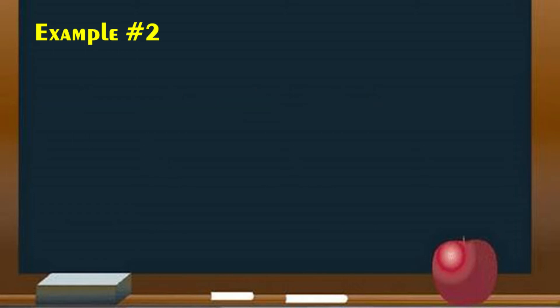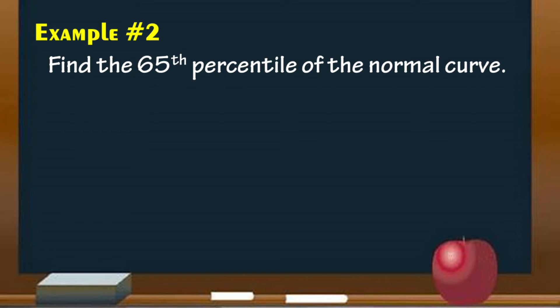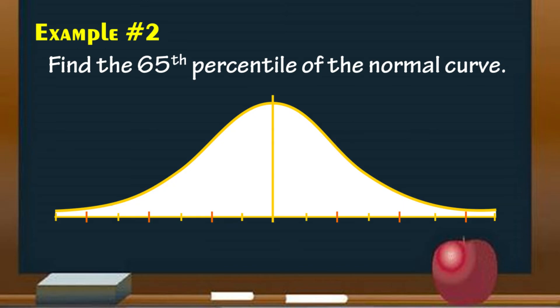Example number 2, locate the 65th percentile under the normal curve. First, draw the normal curve. Second, convert 65% into decimal. 0.65 covers this area of the normal curve.